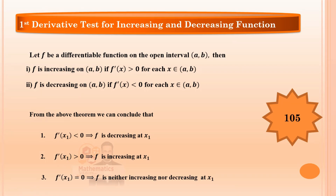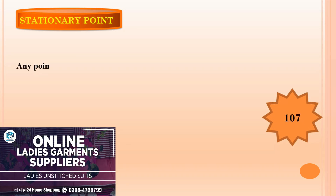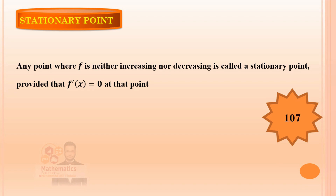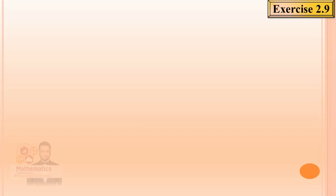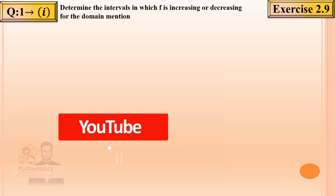Remember these three points to use in the first question. Greater than zero means increasing; less than zero means decreasing; equal to zero means neither. Now, the stationary point — any point where f is neither increasing nor decreasing is called a stationary point, provided its first derivative is zero at that point. This concept will be used as a word frequently going forward.